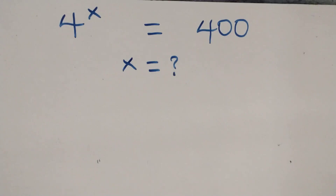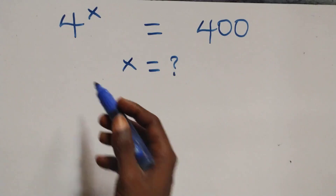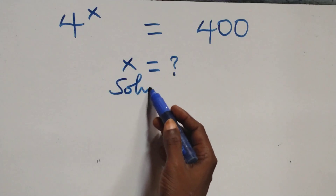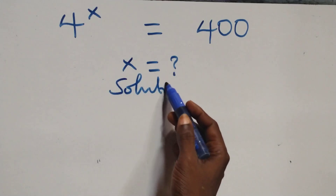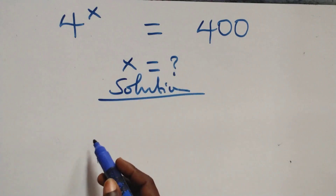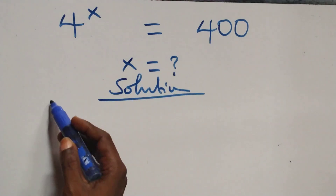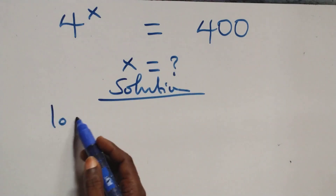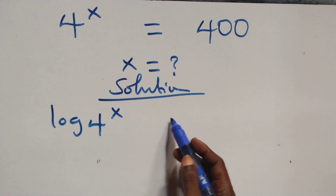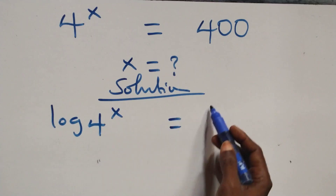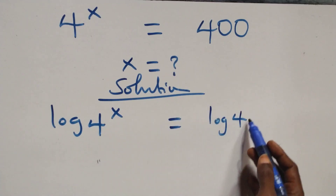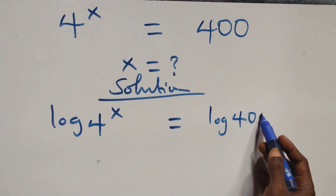Hello, you are welcome to how to solve this nice exponential equation. What we have here, we take the log on both sides, and we have log 4 raised to power x equals to log 400 on this side.